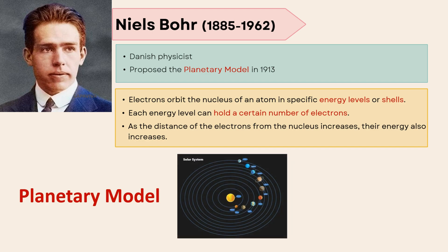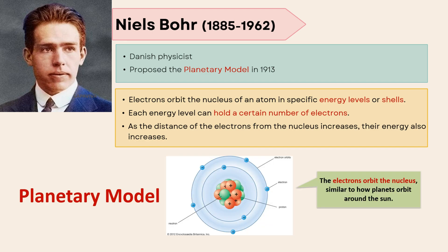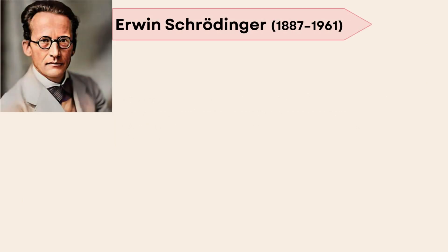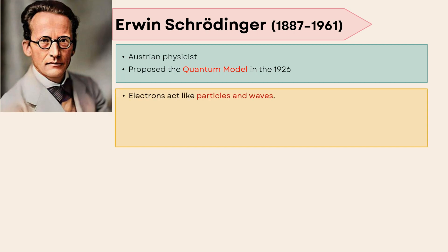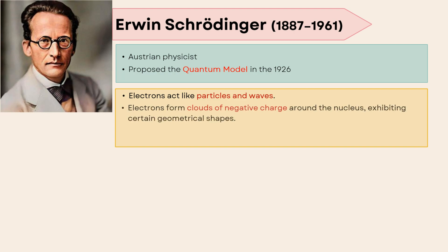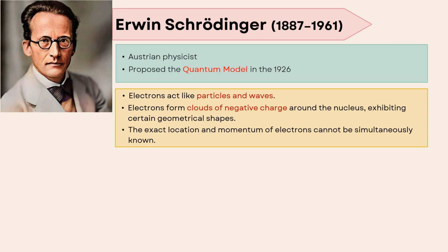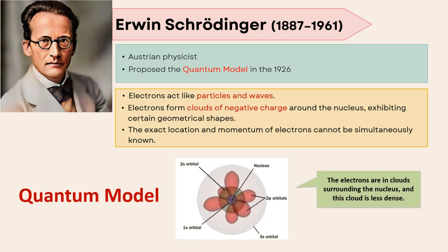This is the planetary model where electrons orbit the nucleus, similar to how planets orbit around the sun. Erwin Schrödinger was an Austrian physicist who proposed the quantum model in 1926. Based on wave theory, electrons act like particles and waves. Electrons form clouds of negative charge around the nucleus, exhibiting certain geometrical shapes. The exact location and momentum of electrons cannot be simultaneously known. This is the quantum model where electrons are in clouds surrounding the nucleus, and these clouds are less dense.